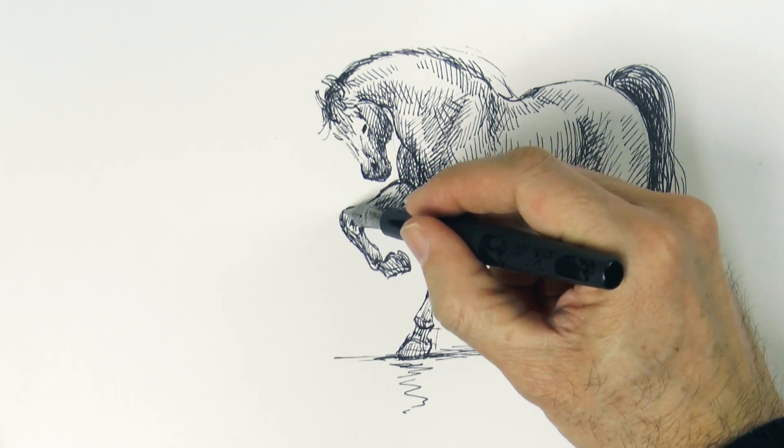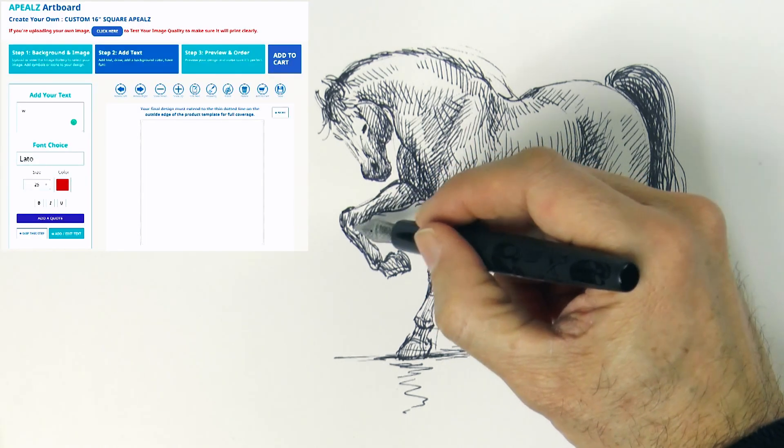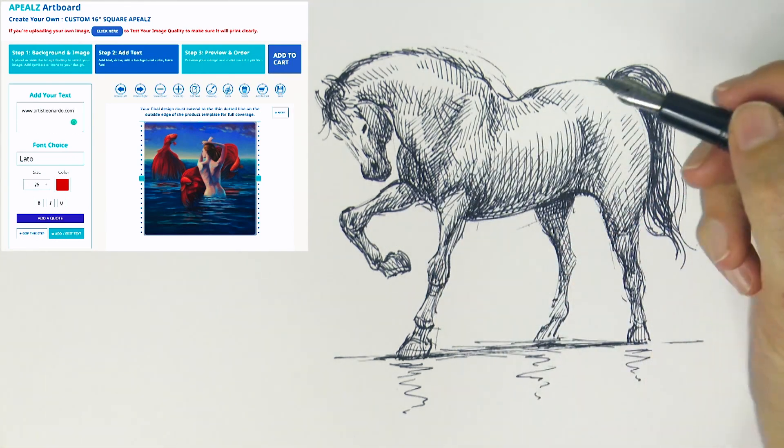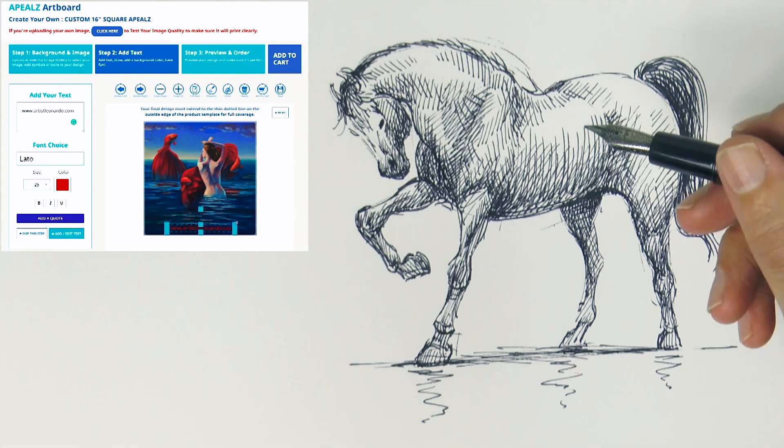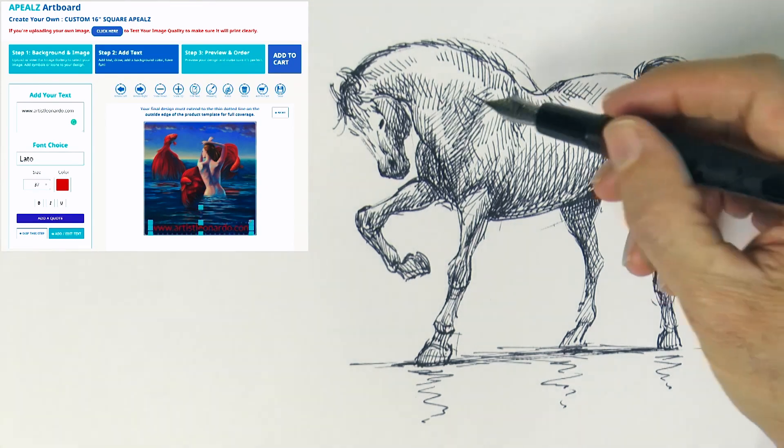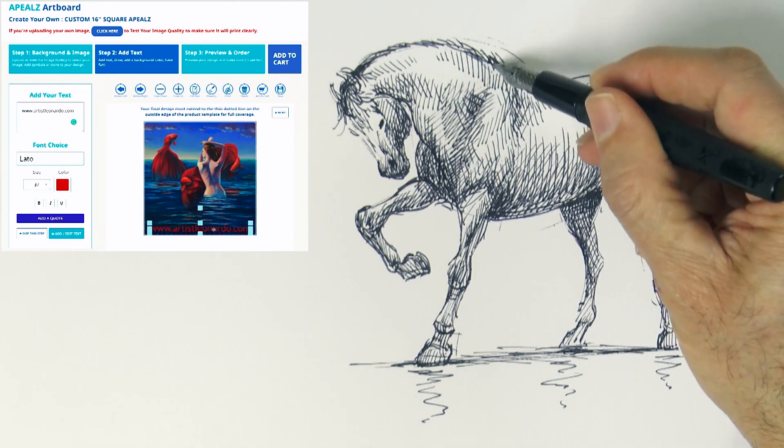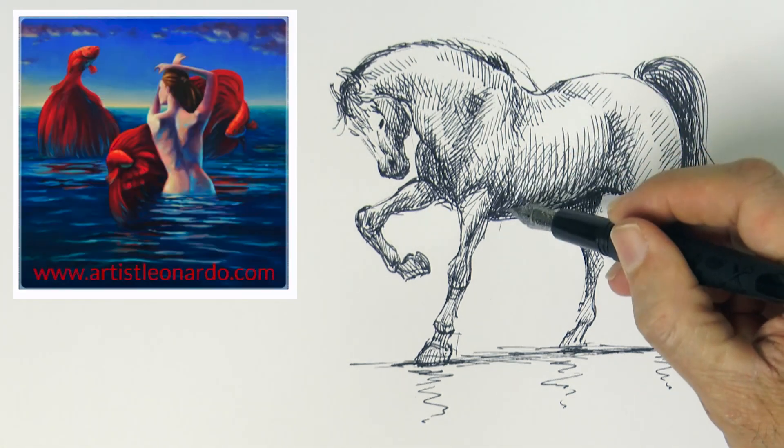So I go to the appeals website, upload my work and design my appeals. It will say artistleonardo.com in bright red letters, so that they also match the flying fish of the painting. And I will be able to place it on my car or whatever I want for others to see.